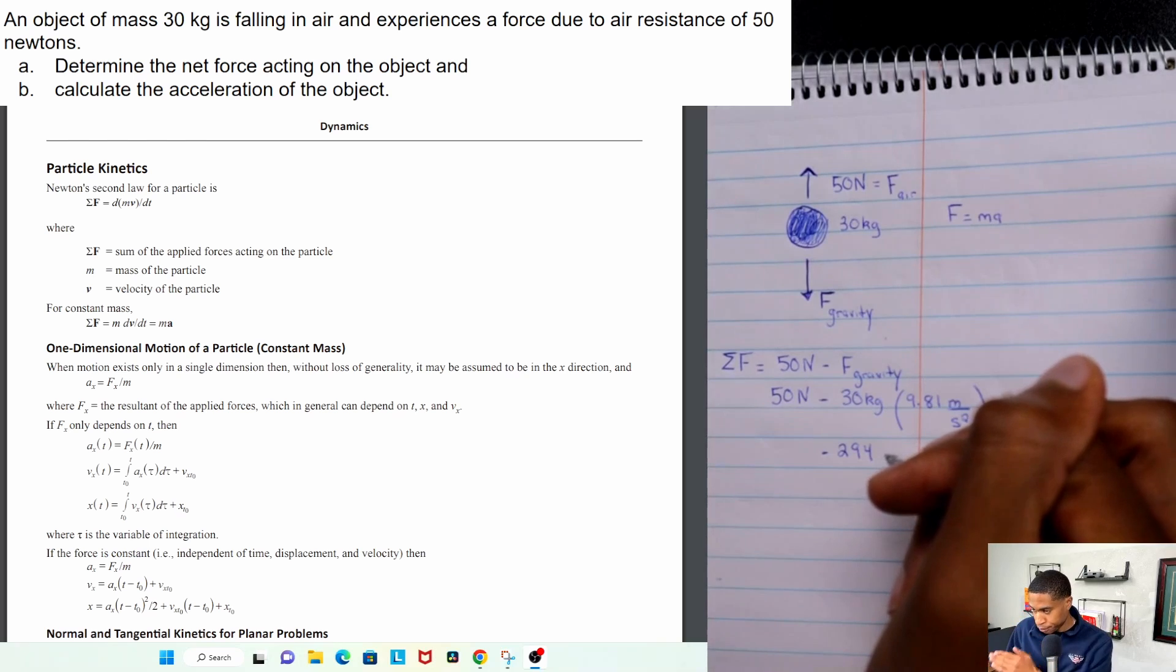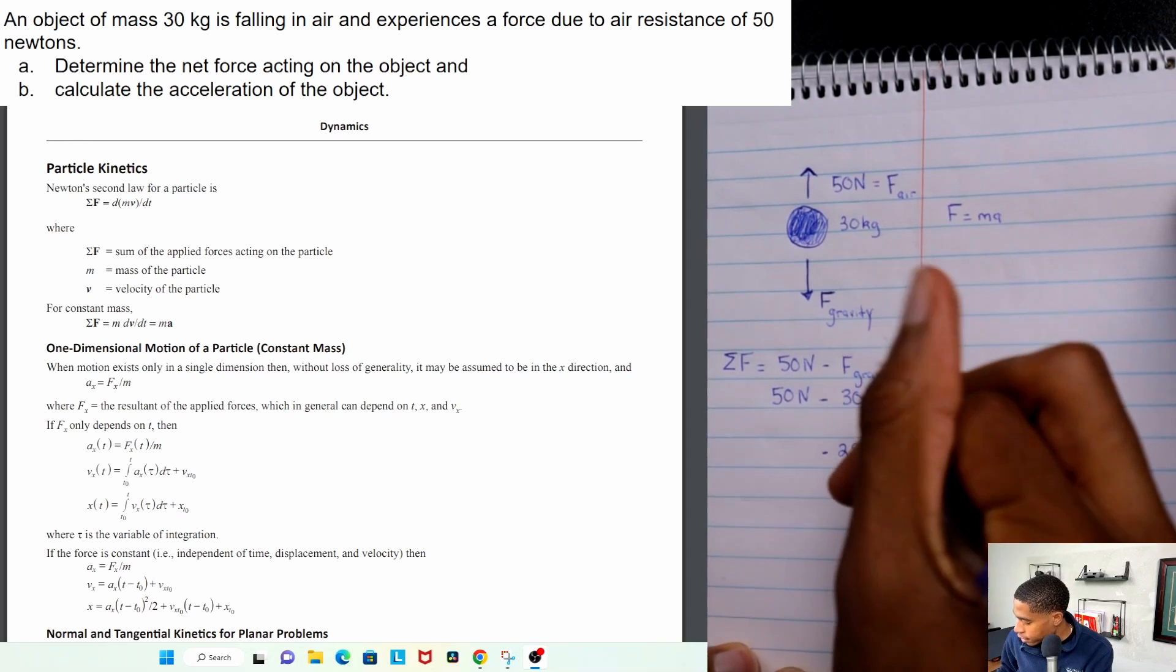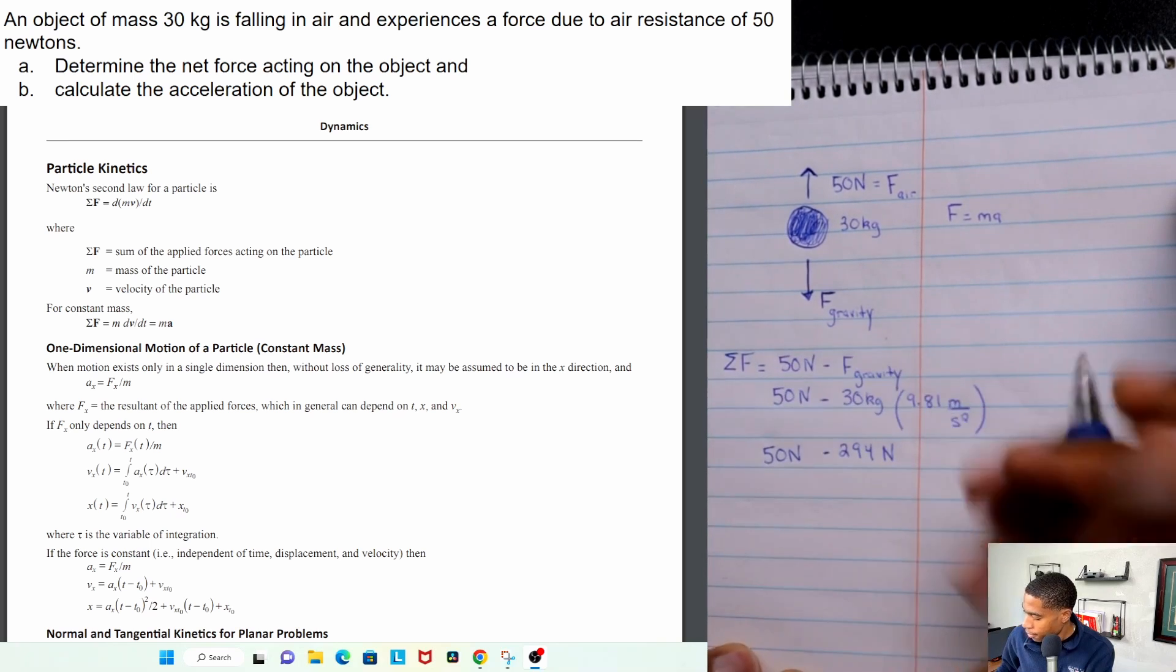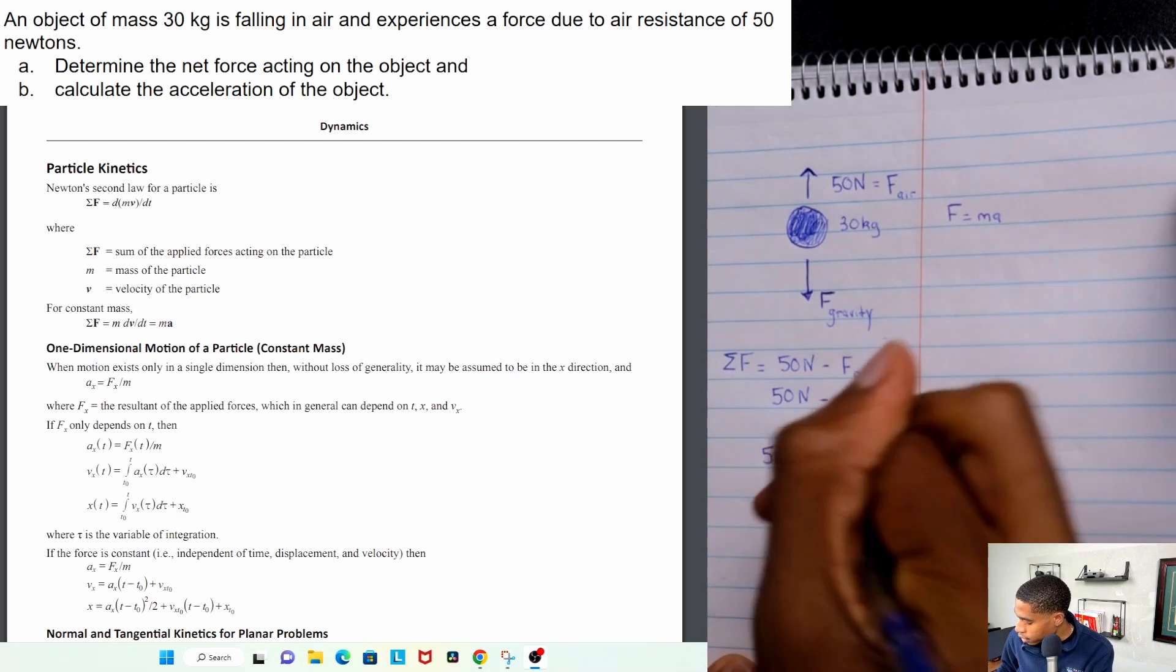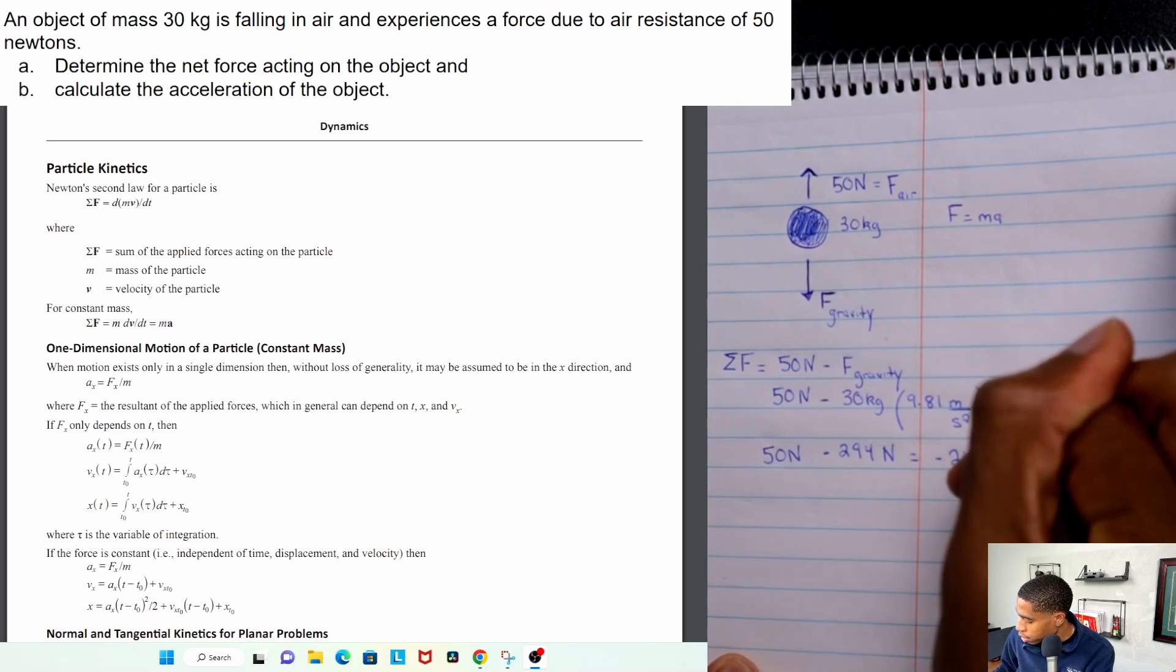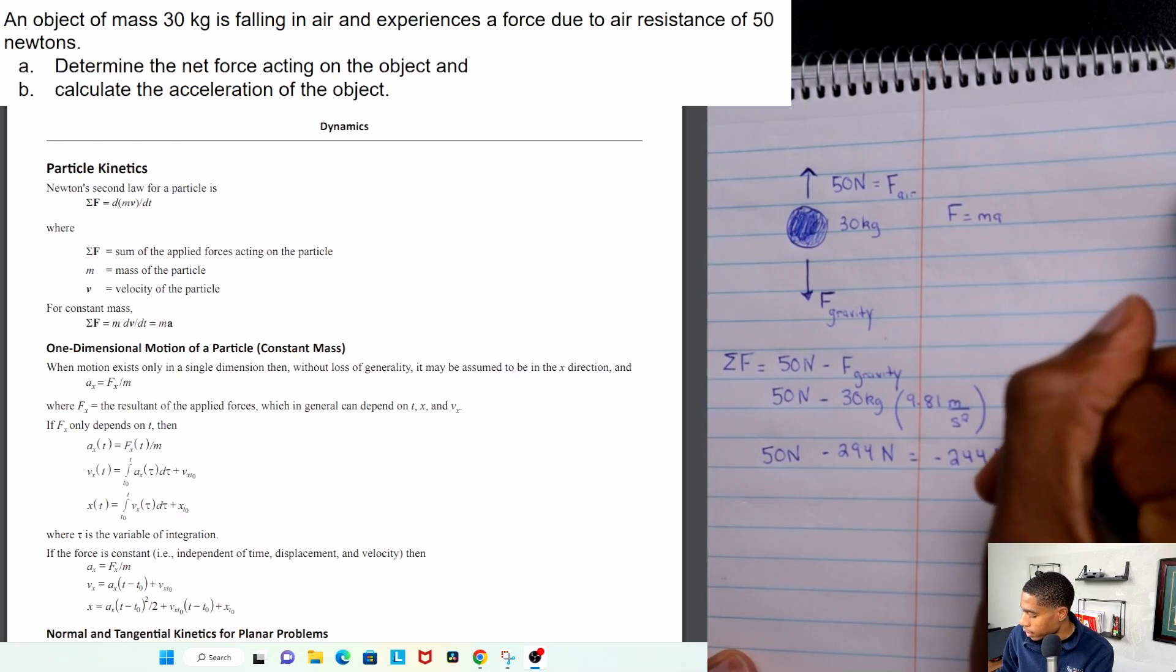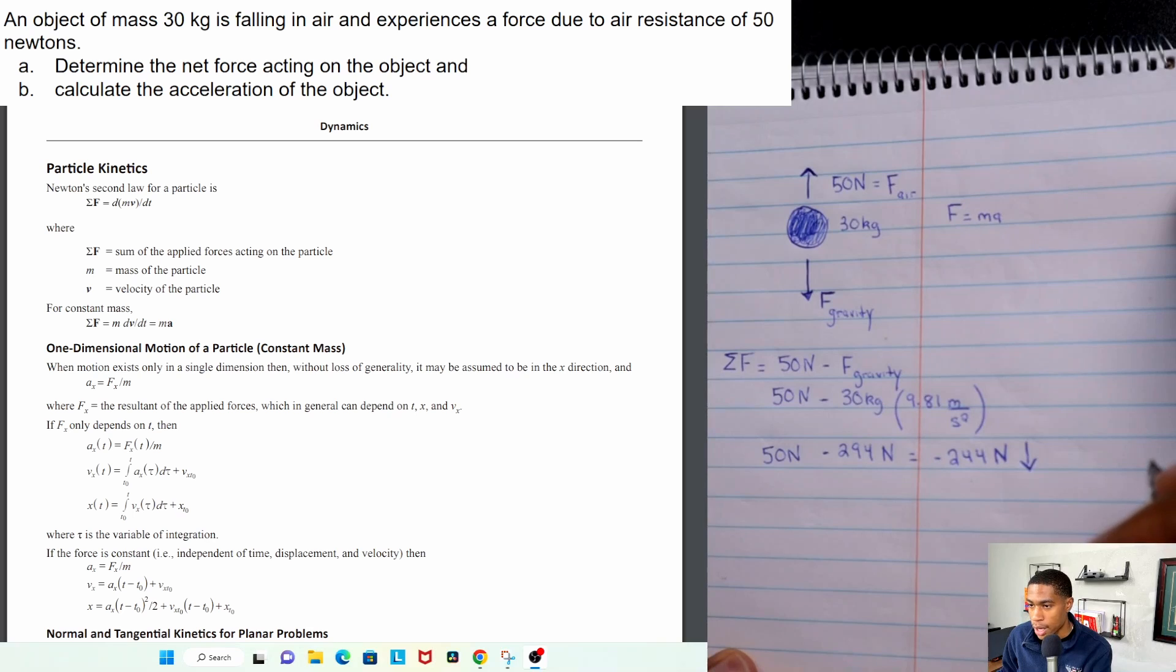Minus 294. And really important that you know your units, because kilograms meters per second squared gives us newtons. So 50 newtons, 50 minus 294, is going to give us equal to a negative 244. Okay, so what does that mean? What does a negative 244 newtons mean? Well, that's just our direction. So we just know that it's coming down with a force of 244 newtons. All right, so that's part A.